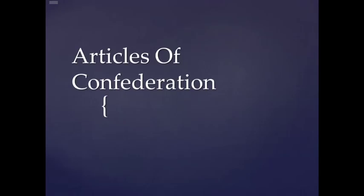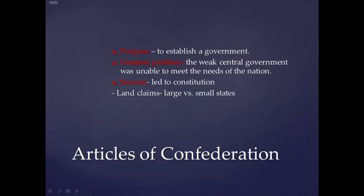Today we'll be learning about the Articles of Confederation. Their purpose was to establish a government. Their biggest problem was the weak central government was not able to meet the needs of the nation. Their successes included land claims, and the issue of large versus small states.